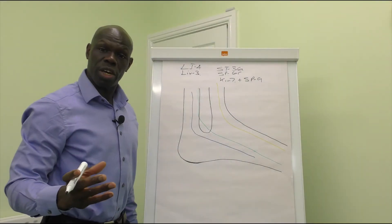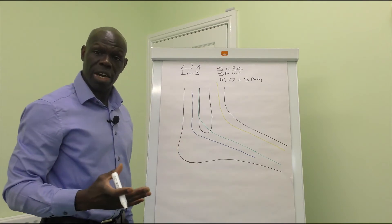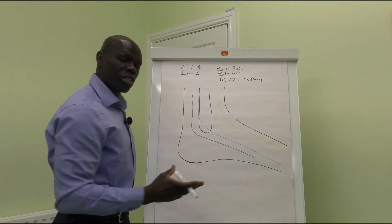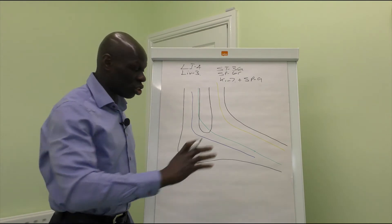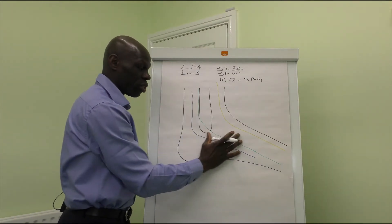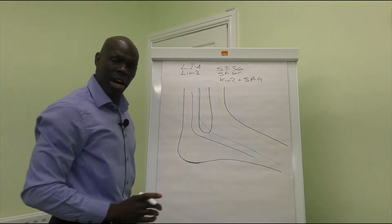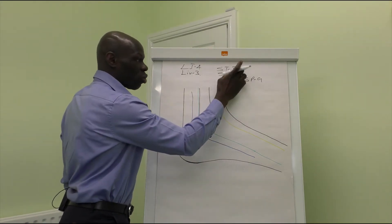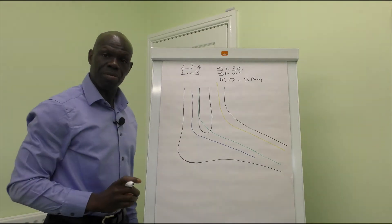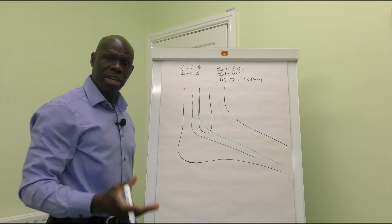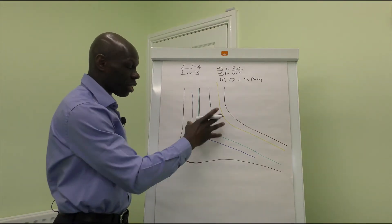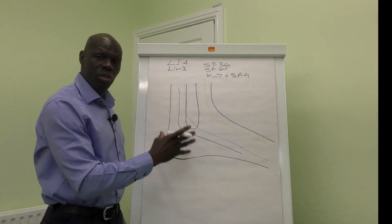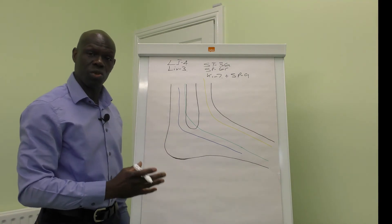These two points — LI4 and LV3 — known as the four gates, will collectively address pain generally throughout the body and allow your body to release endorphins. Liver 3 is a strong point for enhancing circulation generally in the lower limb. So now you're improving general circulation as well as reducing swelling and inflammation — giving a calming effect on the patient. Within 24 to 48 hours this point combination can significantly reduce swelling and inflammation in the area.